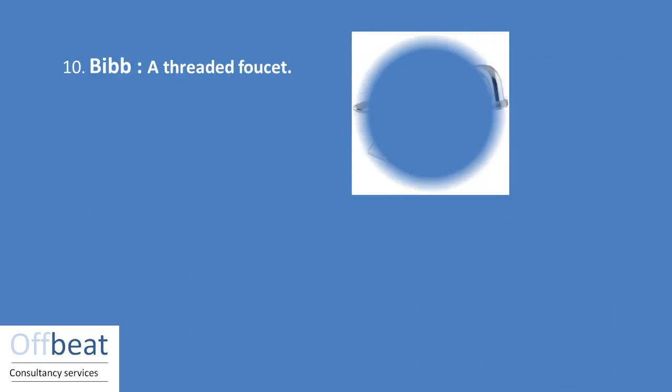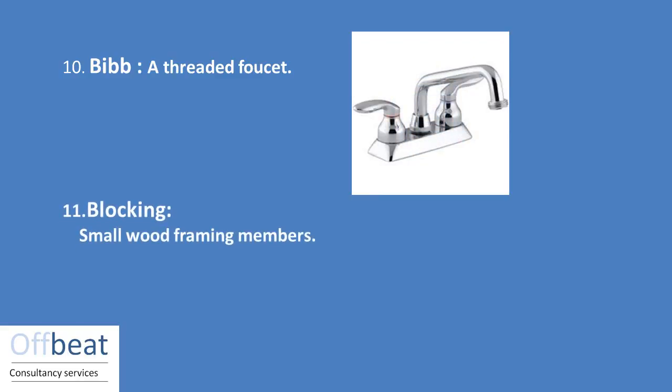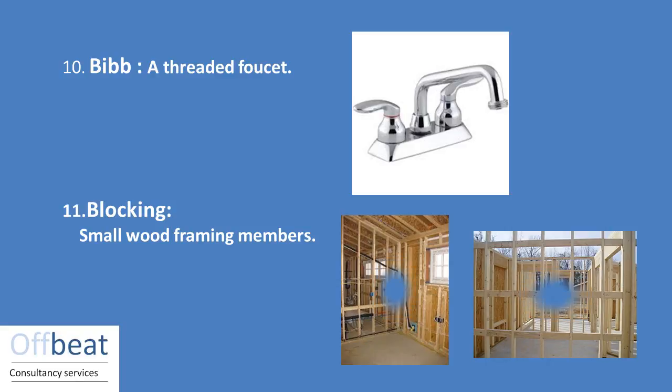Next is a bib. Bib is a type of tap which is visible in this picture. Blockings are the small wooden framing members which are used.